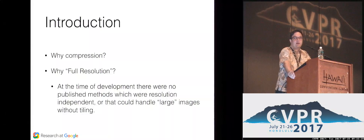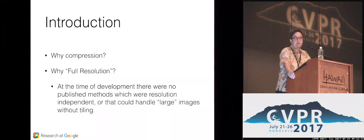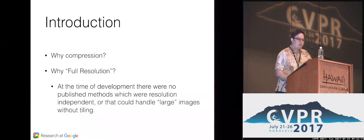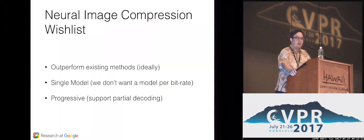In the title of my talk, I have the word 'full resolution.' The reason is because there has been some work back in the 90s and early 2000s which tried to address the task of image compression with neural networks. But almost always, they were limited to very small resolution images. This work, as far as we are aware, is the first that can generalize to any resolution image using a single model.